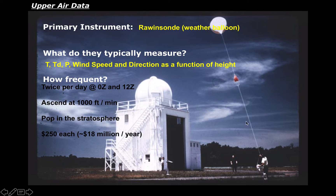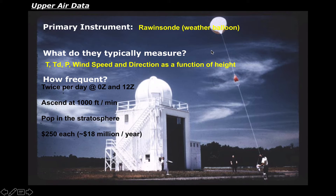Sometimes we attach a parachute to the instrument pack so it doesn't fall too fast. This older one here is from the 70s. Because newer instrument packs are so small and light, sometimes you don't even need parachutes — the leftover tethers of the balloon are enough to slow it down. We launch these weather balloons twice a day all over the United States and the world, collecting information about the vertical profile of the atmosphere.